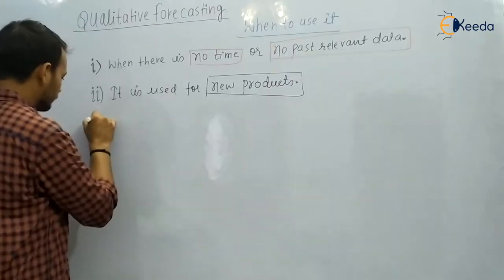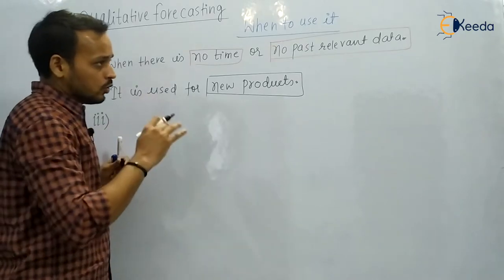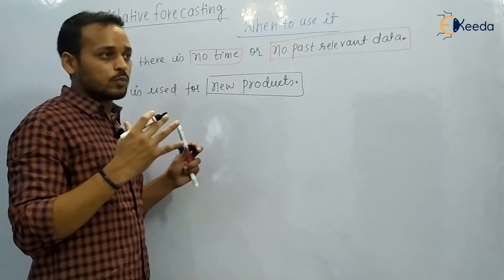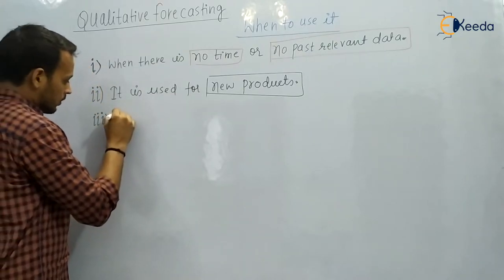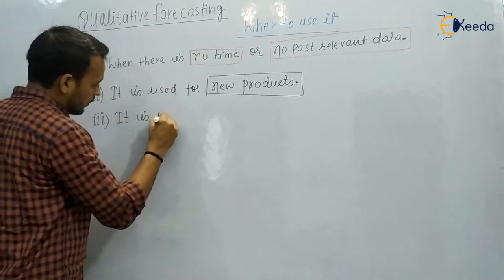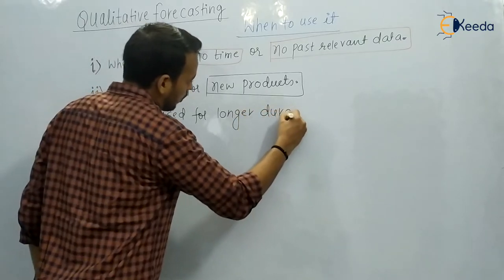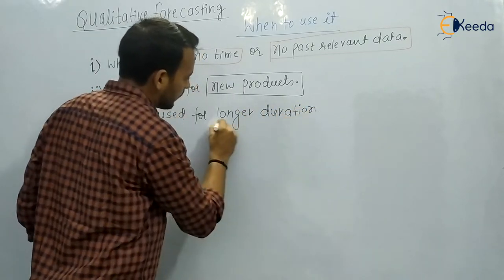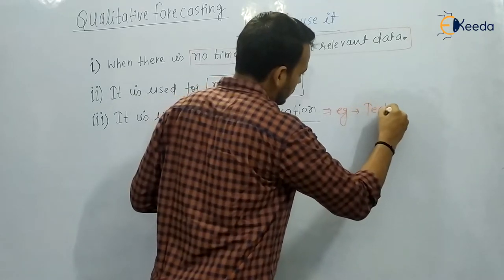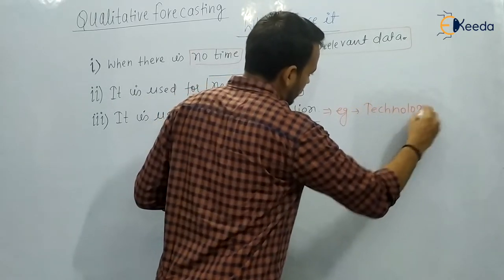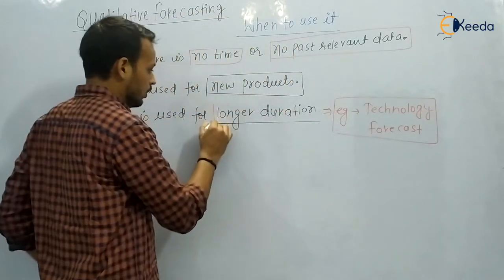The third case is that qualitative forecasting is used for longer duration — more than one year. When we are going to launch our product for more than one or two years, we use qualitative forecasting. One example of a longer duration product is a technology forecast. You can relate this with mobile technology.